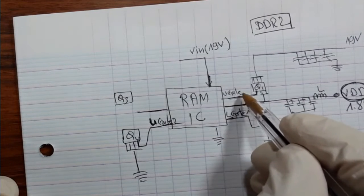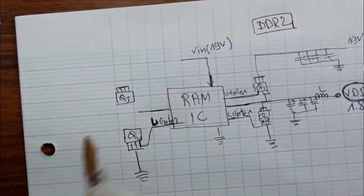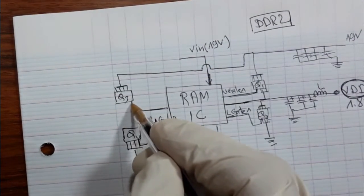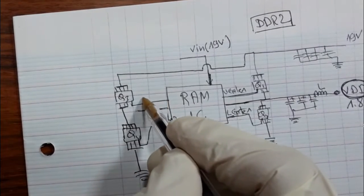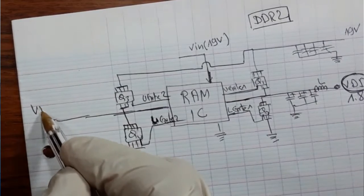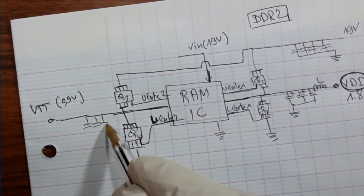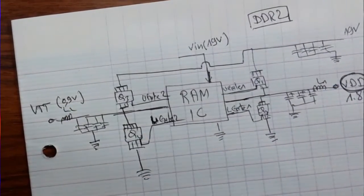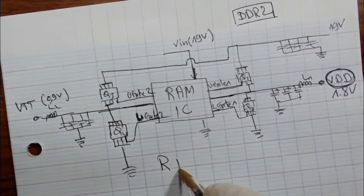We have upper gate one and lower gate two. This MOSFET should be connected to 19 volt, and the source will be connected to the drain of the other MOSFET. The gate is the upper gate two. From this side we will get the VTT, equal to 0.9 volt for DDR2. We have a capacitor connected to ground, a coil L1 and L2. This is the main component of the RAM circuit.